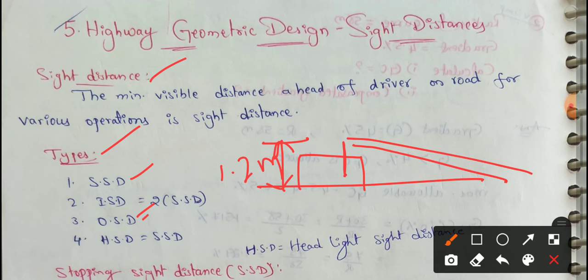Next one, OSD. OSD is Overtaking Sight Distance. When a vehicle moves, you can know which vehicle is taken by the same route. SSD has the same OSD as per IRC.